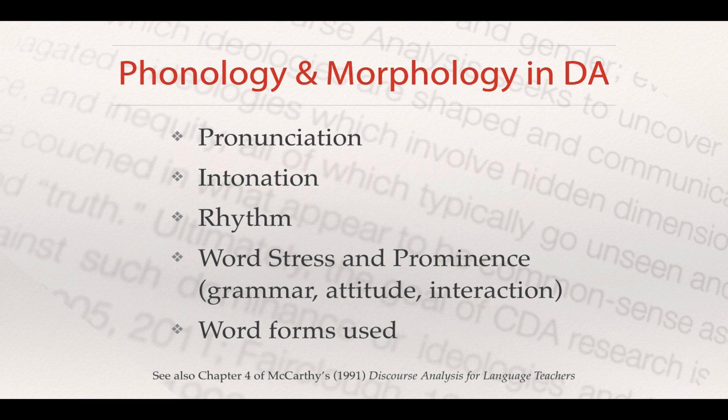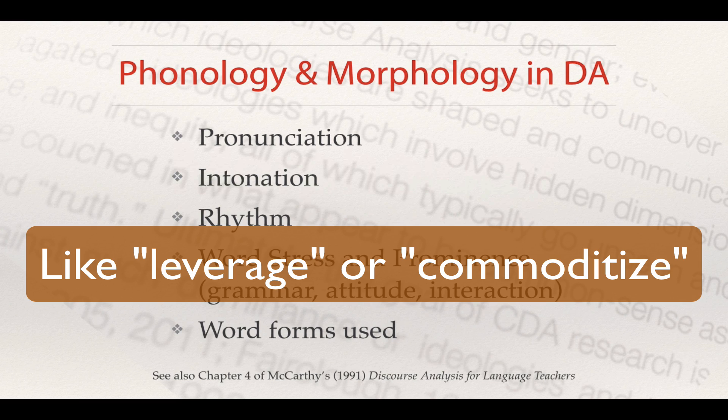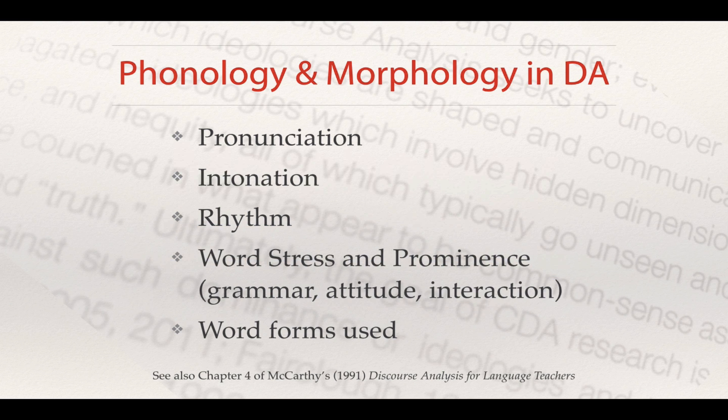Also, interaction between people can be handled in particular ways by word stress and prominence. We're often interested in how word forms are used — so making a verb into a noun can be a kind of common morphological process in business discourse, for example.